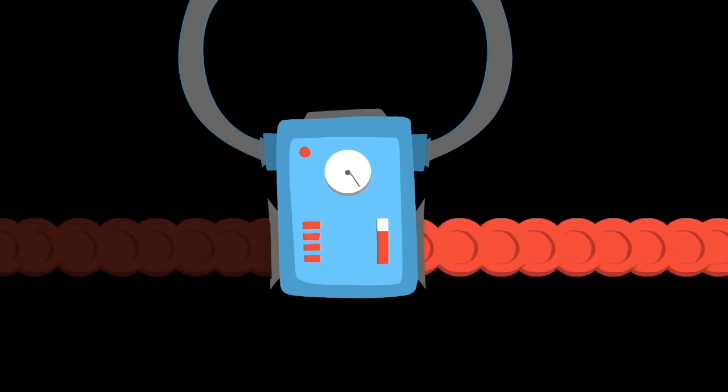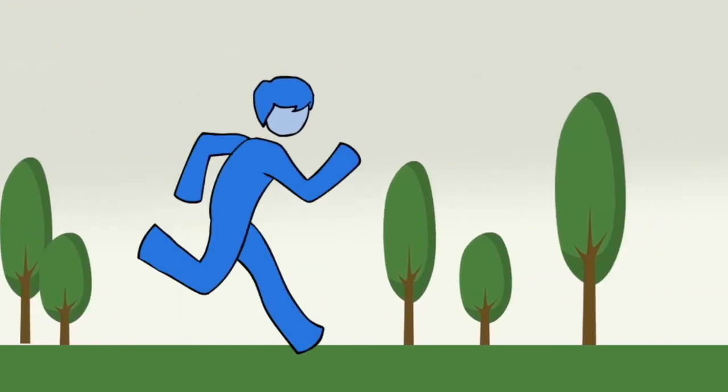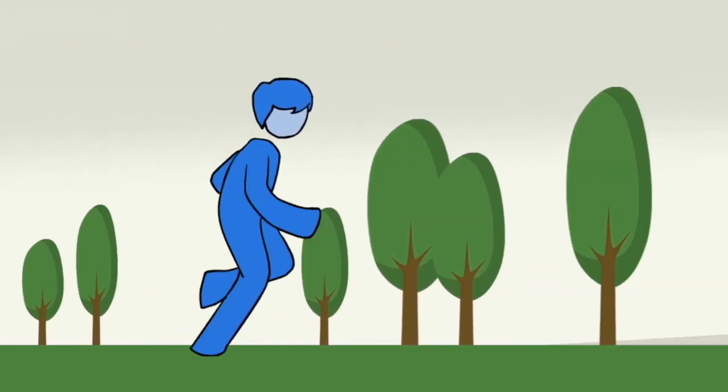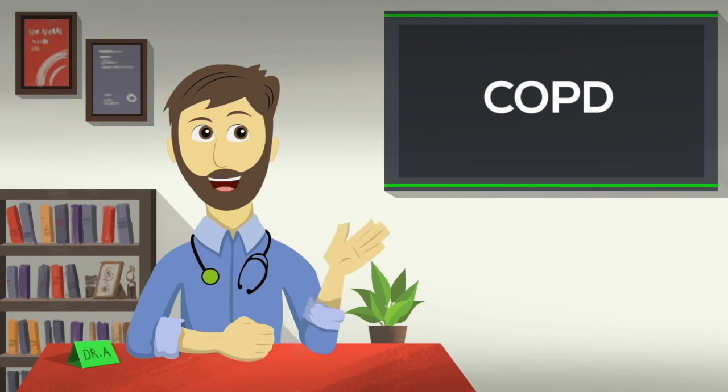Our lungs have extra factories that turn on when we need more oxygen, like when running or playing. All this work keeps happening every moment of our life, but we don't notice it. It becomes a problem when things go wrong, like in COPD.